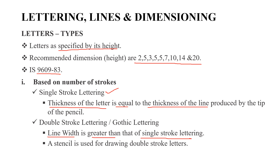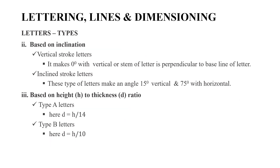The next type of letters is based on inclination. The first type is vertical stroke lettering, which is at 0 degrees. The next is inclined stroke lettering, where the vertical angle is 15 degrees and the horizontal angle is 75 degrees.